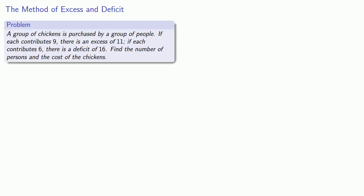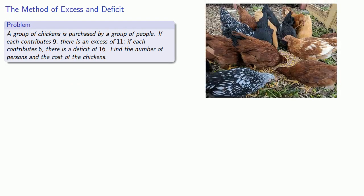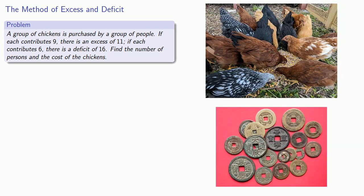One of the problems is as follows: a group of chickens is purchased by a group of people. If each contributes nine, there is an excess of eleven. If each contributes six, there is a deficit of sixteen. Find the number of persons and the cost of the chickens.